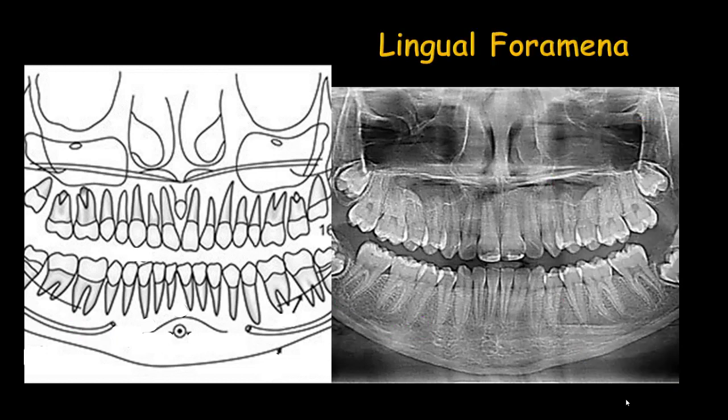The lingual foramen is beneath the central incisors in the mandible. It can sometimes be seen in the panoramic radiograph, but because of superimposition of the ghost image of the cervical vertebra in this area, it is sometimes not very well detected. If you see a round radiolucency in that area beneath the central incisors, you can identify it as the normal anatomical landmark for the lingual foramen.